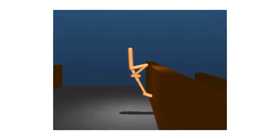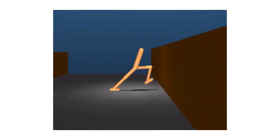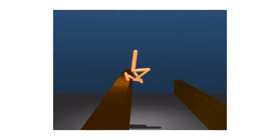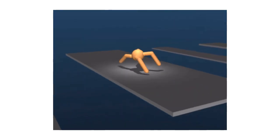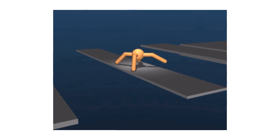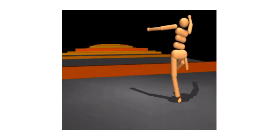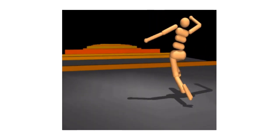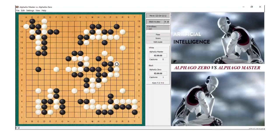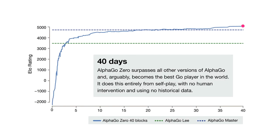Reinforcement learning is a method of learning where an agent is given positive rewards for correct moves and penalized for wrong moves. This simple concept forms the basis for modern AI breakthroughs we've seen over the past years. AlphaGo Zero, for example, learned the ancient game of Go from scratch by continuously playing against itself, and within a matter of 40 days, it surpassed every human and computer to become the best Go player in the world.